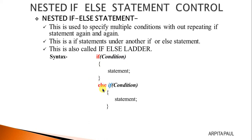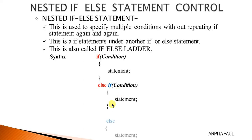In some scenarios we need to check more than one condition. There we will write if with this else — we write else-if, and within brackets we provide the condition. If this condition is satisfied, then only this statement will be executed. If this condition is false, then we write the else part of this else-if as well, along with the statement to be executed.